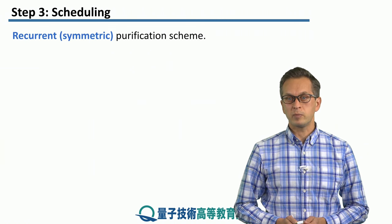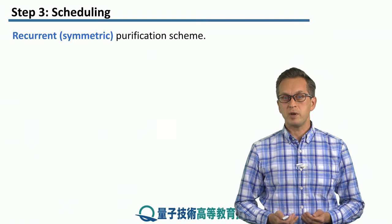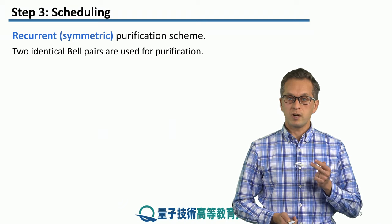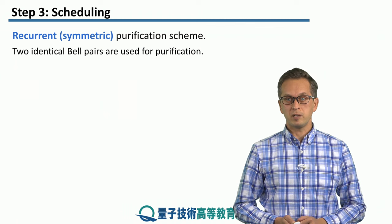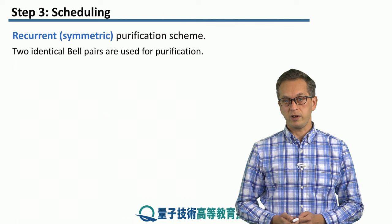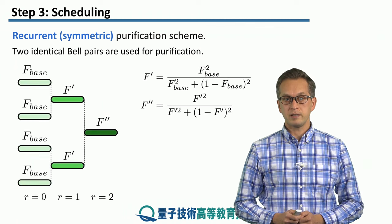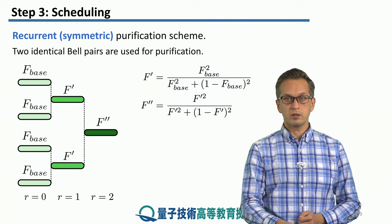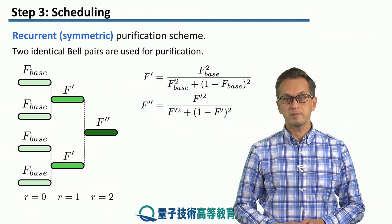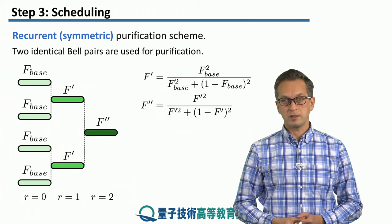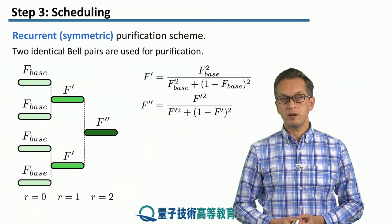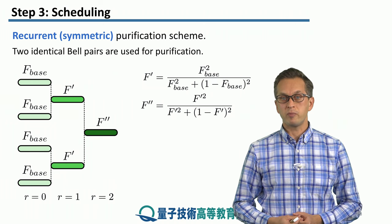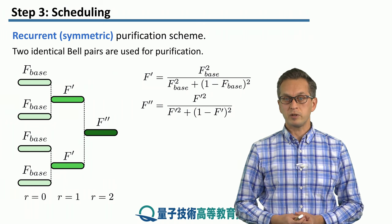Let's consider a purification scheme called the symmetric recurrent purification scheme. In here, we start with two identical Bell pairs and we purify them, just like in this picture here. Over here, we start with four base Bell pairs, each with fidelity f_base. We purify the first pair to get a new Bell pair of fidelity f_prime, given by the expression on the right.